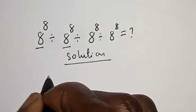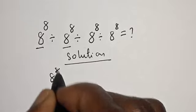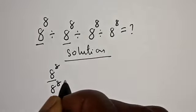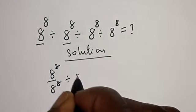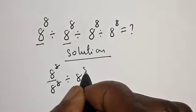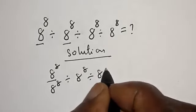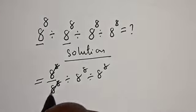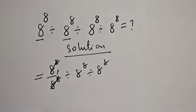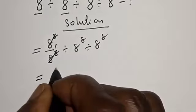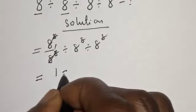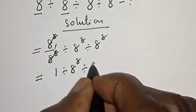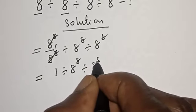Let's start with the first part: 8 raised to power 8 over 8 raised to power 8 divided by 8 raised to power 8 divided by 8 raised to power 8. This one will cancel this, giving us 1. This is equal to 1 divided by 8 raised to power 8 divided by 8 raised to power 8.